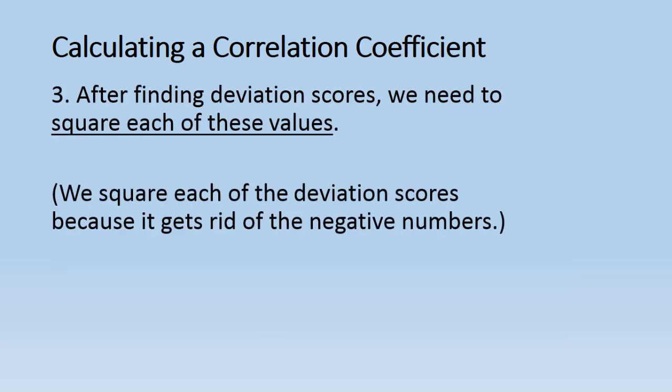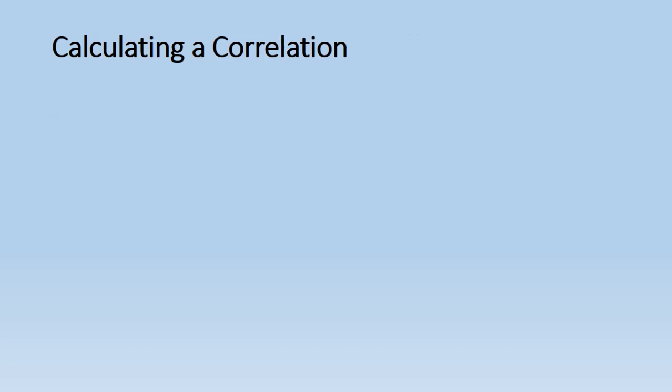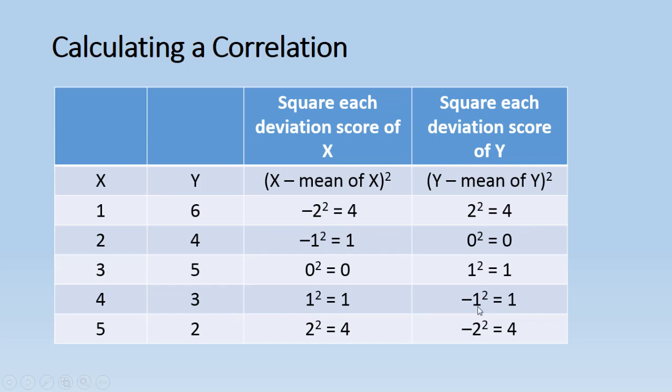So next what we need to do is we need to square each of these values. We need to square the deviation scores. And the reason for that is it gets rid of the negative numbers. Remember how when I showed you that the deviation scores always sum or add up to 0? We can't really do much with it if our answer is 0. So when we square them, that gets rid of the negative values. And then later we'll take care of that square by taking the square root at the end. But for now, step 3 is squaring the deviation scores. So all we're doing now for X is squaring each one, and that gives us these values. And for Y, we're squaring each of those deviation scores, and we get these values here.